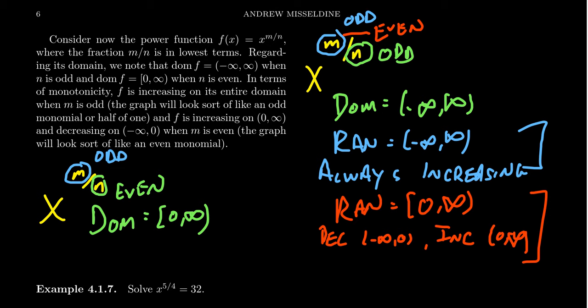We'll restrict the domain to zero to infinity to avoid imaginary values when graphing — though for solving algebraic equations we might allow them. As for the range, on the interval zero to infinity the function is increasing, so the range is also zero to infinity and the function is always increasing.